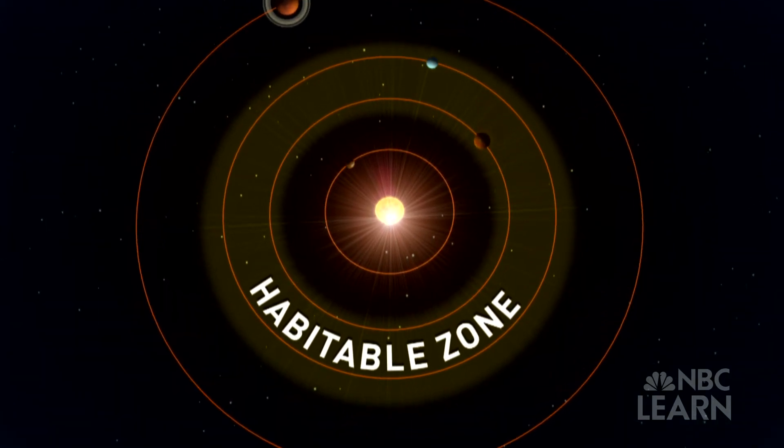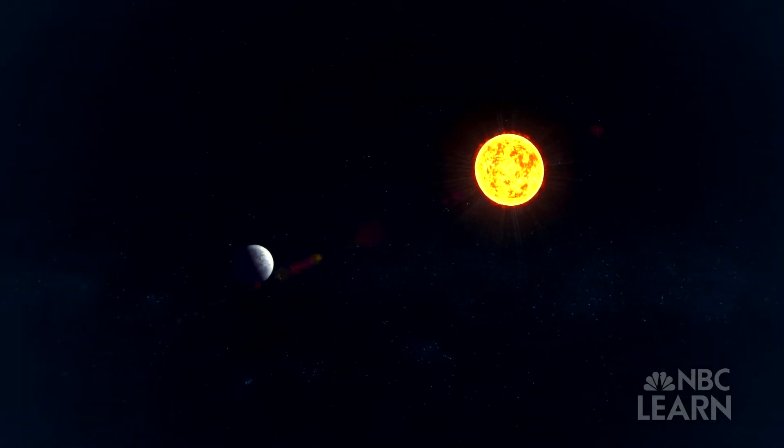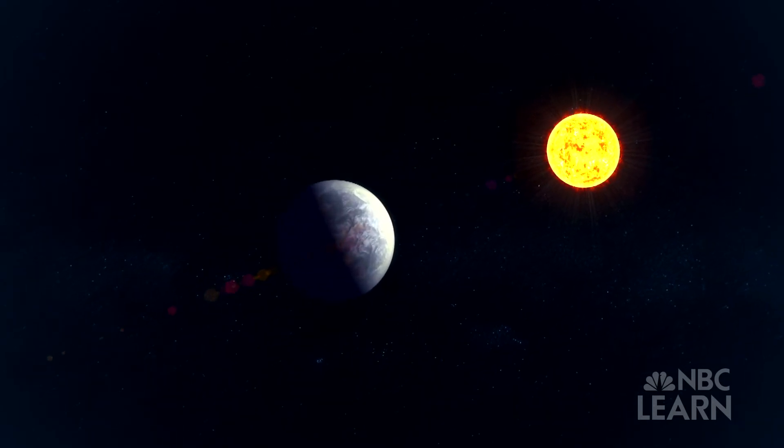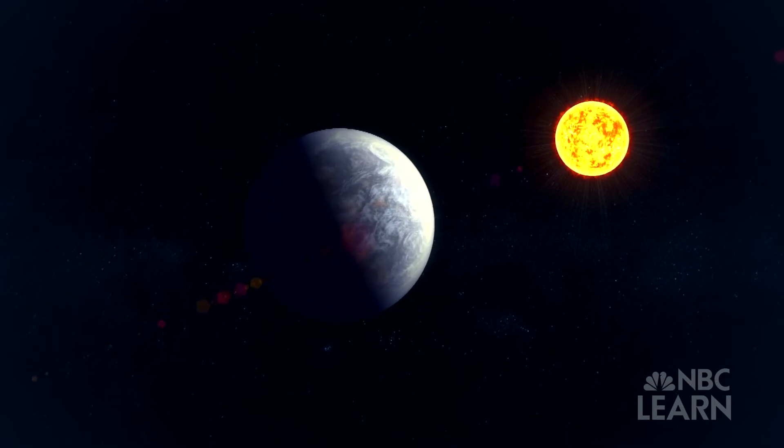The habitable zone is sometimes known as the Goldilocks zone, where it's just the right temperature. It's not too hot and not too cold, but it's just the right temperature where we can have water, and water is what we think is required for life.